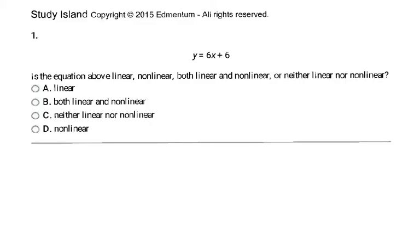In this first example, we are looking at the equation y = 6x + 6 and it wants to know if it's linear, nonlinear, both linear, or neither. As I mentioned, it's always going to be linear or nonlinear, so I can go ahead and get rid of 'both' and 'neither' right off the bat. When looking at an equation, for it to be linear there are certain conditions it must meet.